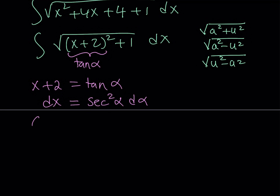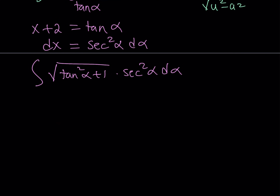Let's see what happens when we substitute. We get the square root of tangent squared alpha plus 1, multiplied by secant squared alpha d alpha. Since tangent squared alpha plus 1 equals secant squared alpha, the square root gives us secant alpha, and multiplying by secant squared alpha gives us secant cubed alpha.